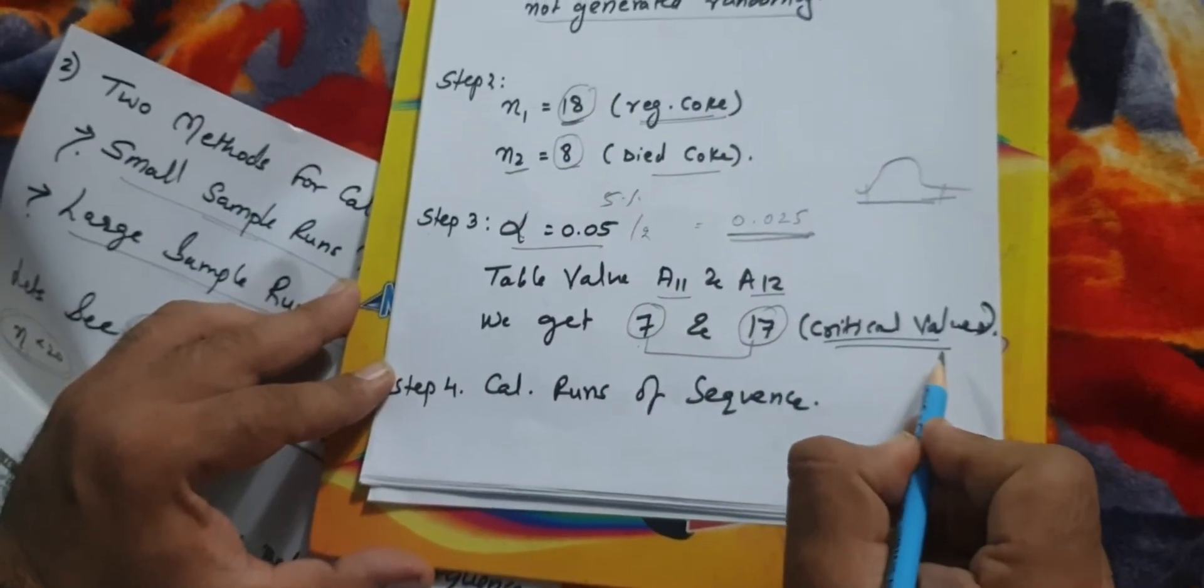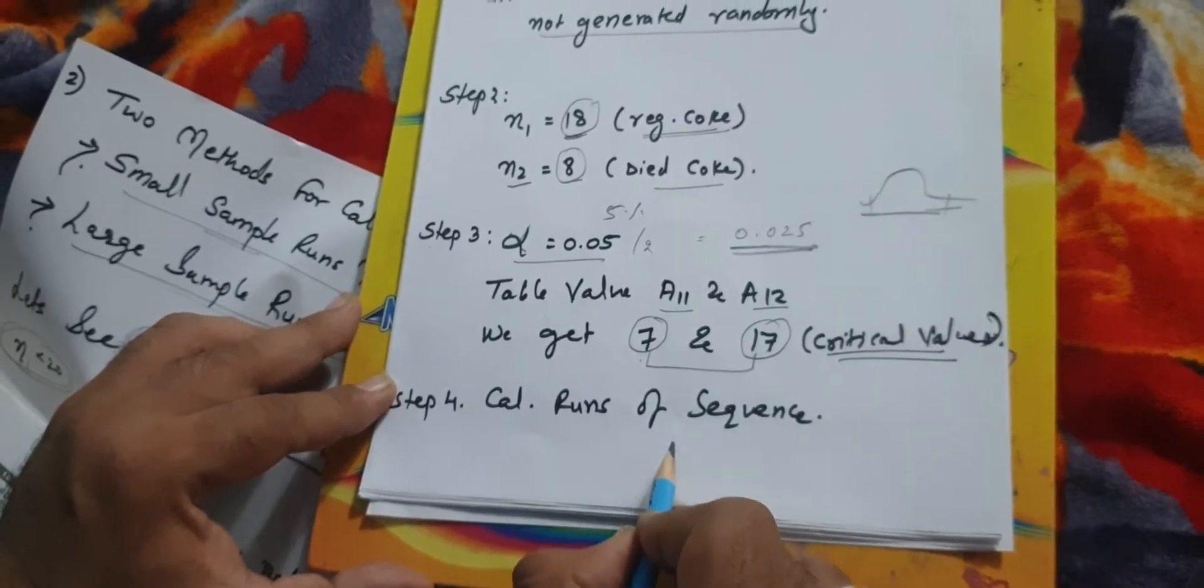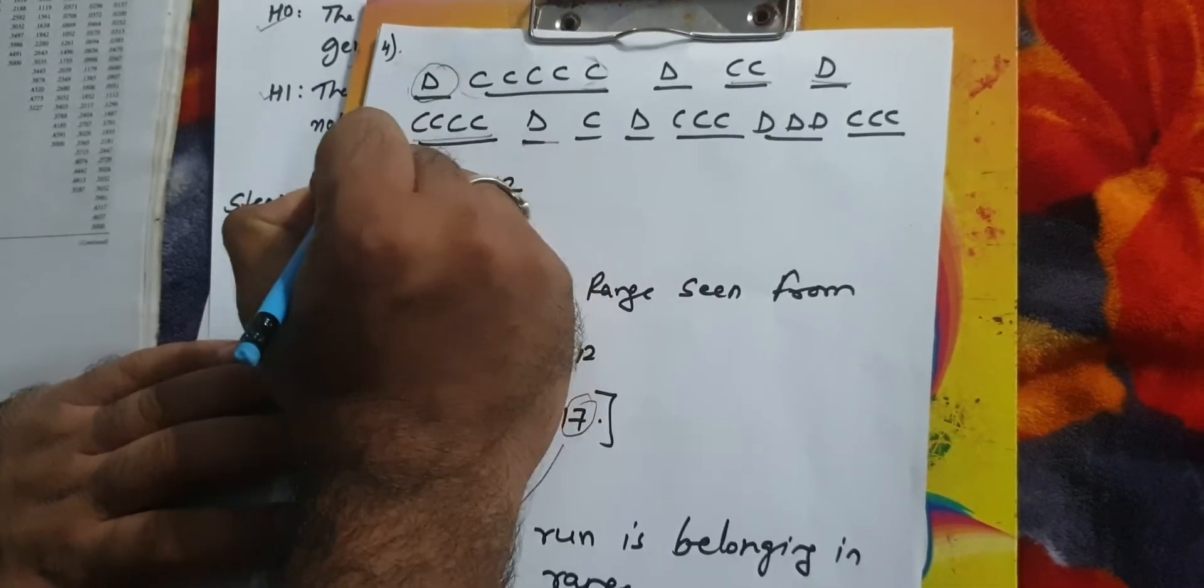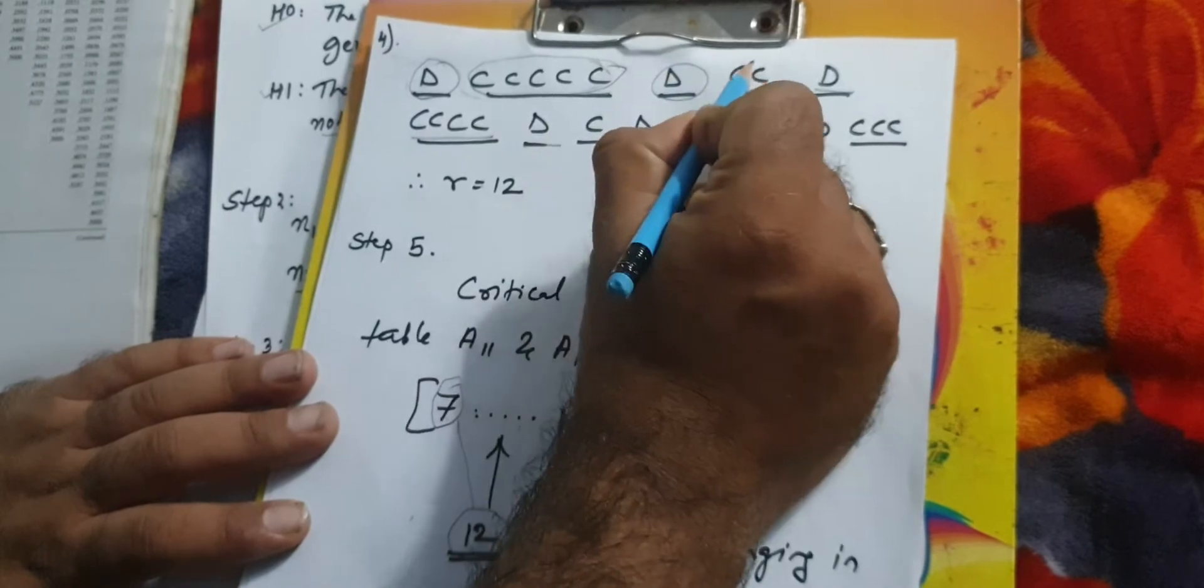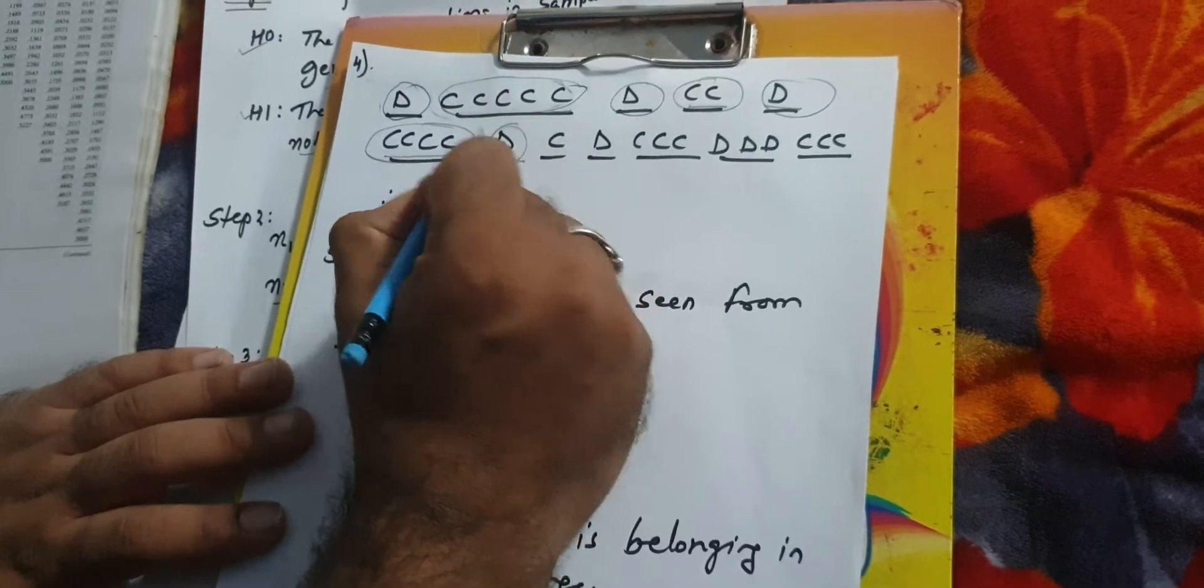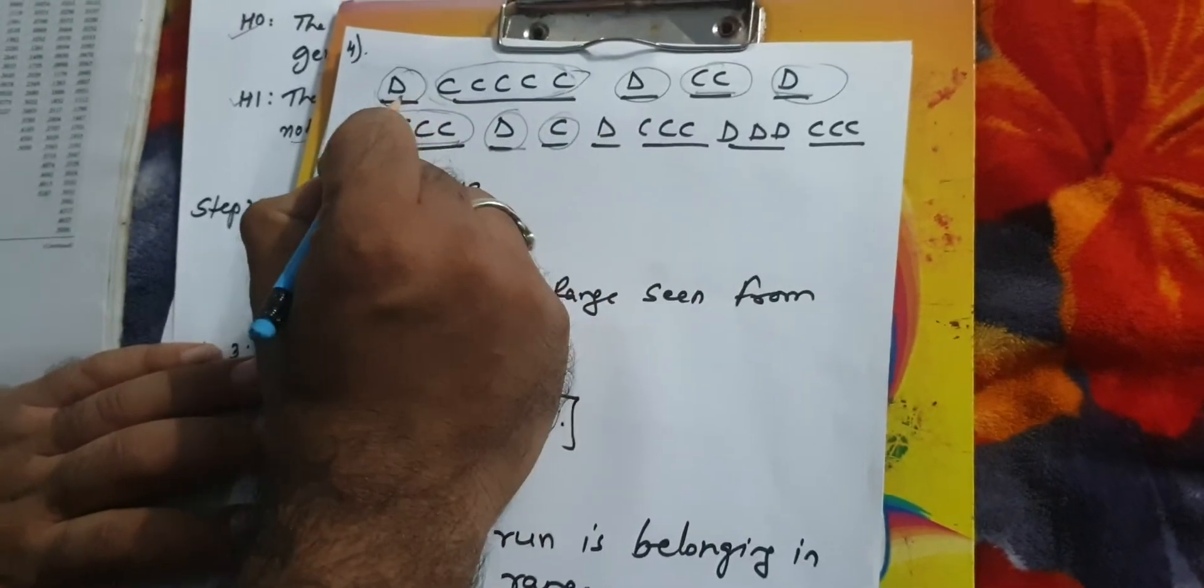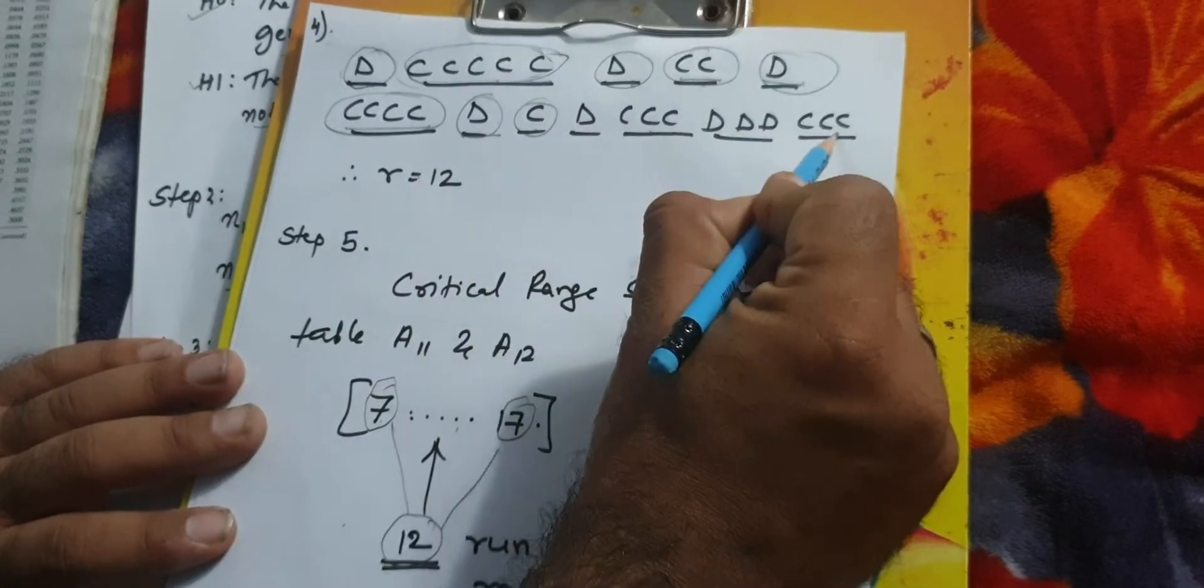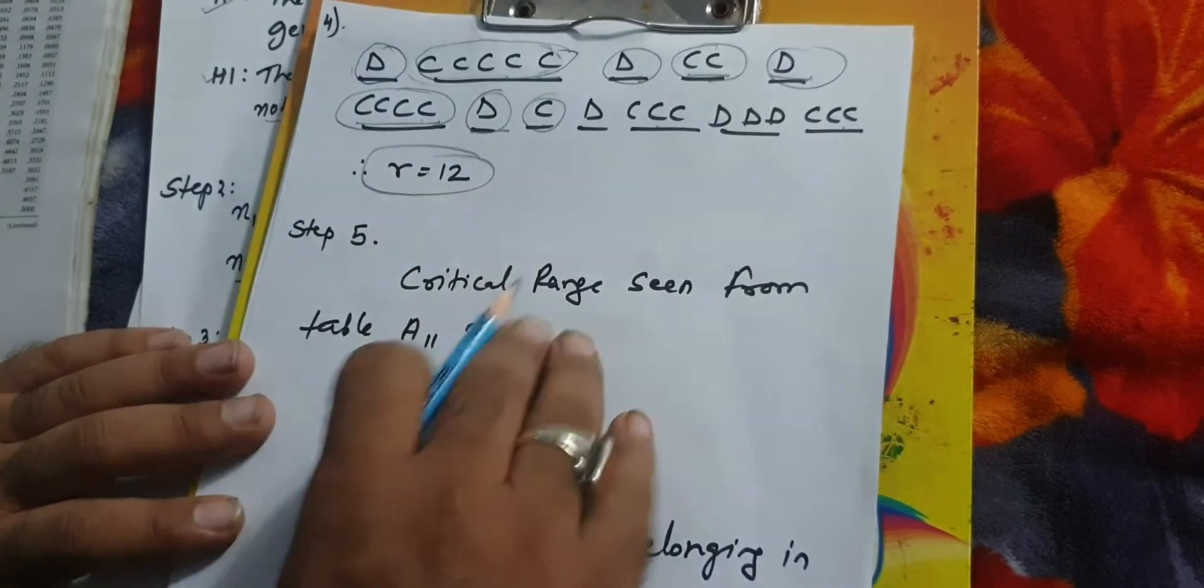Step 4 is to calculate runs sequence. To calculate the runs, we need to see the question again. D is one run, the pair of C makes another run. We need to differentiate every pair or group of C and D. We calculate 1, 2, 3, 4, 5, 6, 7, 8, 9, 10, 11, and 12. These are the 12 different patterns that make 12 different runs.